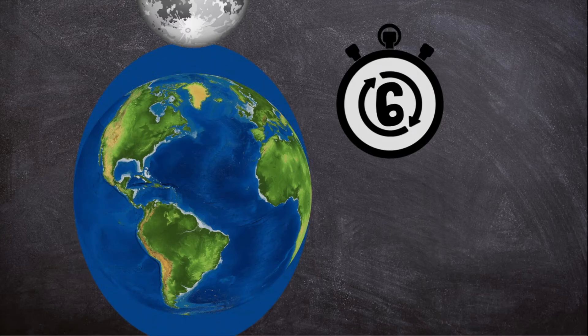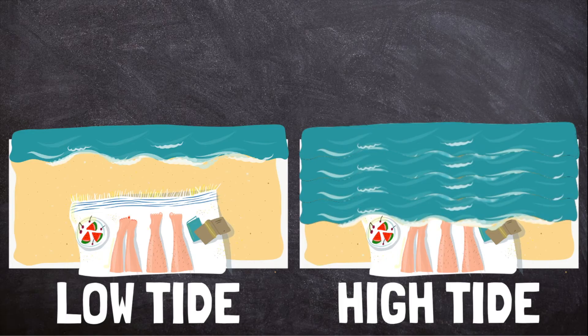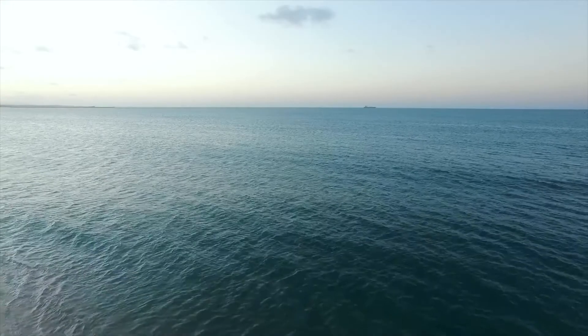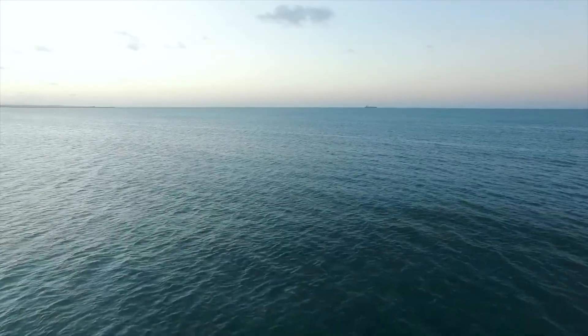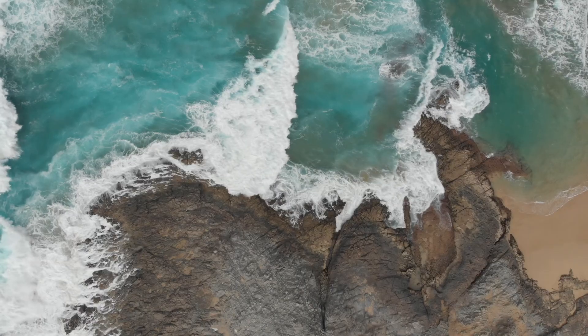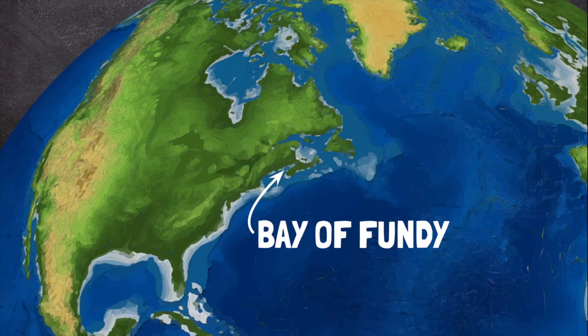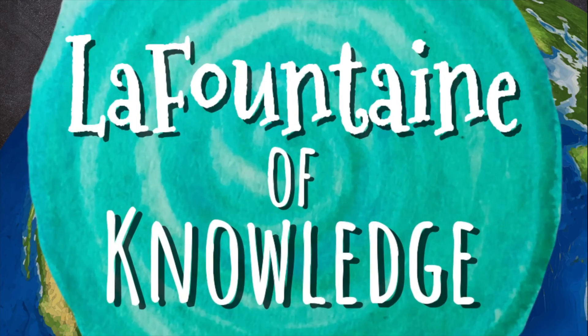The difference in sea level between high and low tide is called the tidal range. This is usually only about two feet in the open ocean, and even larger near the shore. The largest known tidal range is in the Bay of Fundy in Canada, where the water level changes by 40 feet.